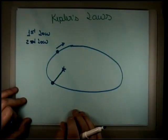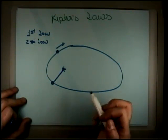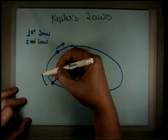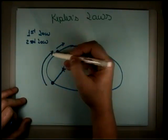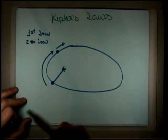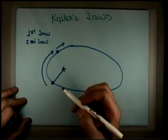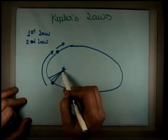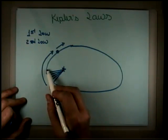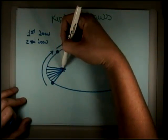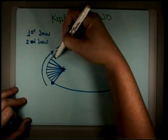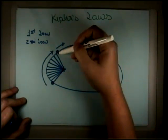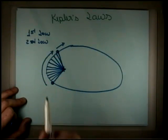What the second law says is that the time that it takes the planet to move from this position here, let's say it's here August 1st and it takes two months to travel here, and it will be there on September 1st. So while traveling, the planet covers an area here.